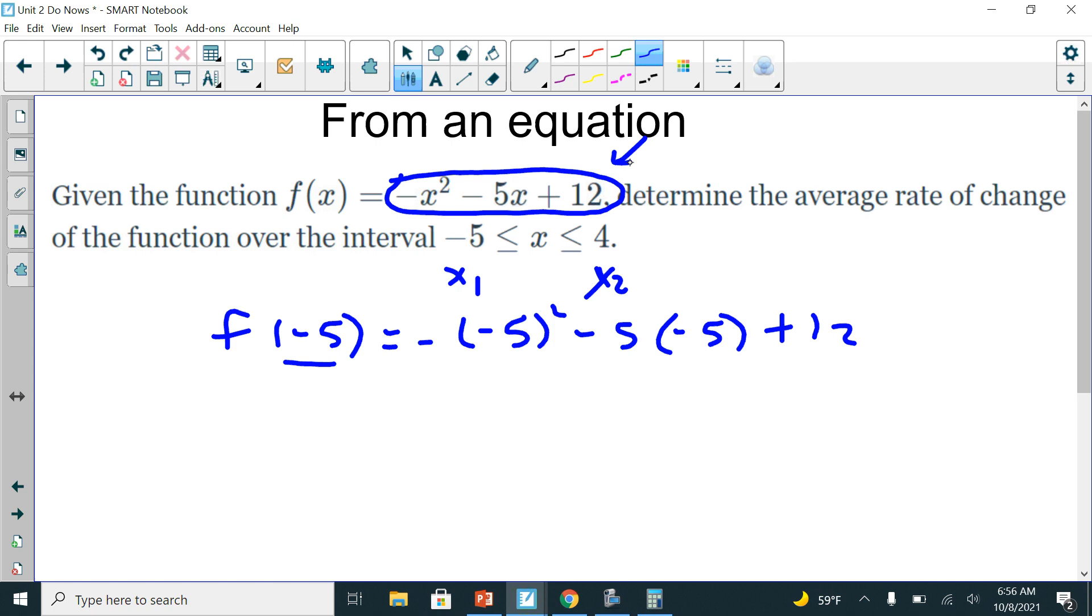So negative 5 squared is 25, and there's a negative sign in front, so that's negative 25. Negative times negative is a positive, so that's plus 25, and then I have plus 12. So my negative 25 plus 25 is 0, plus 12 is equal to 12. So that's equal to 12. So there's my, this is my y1.